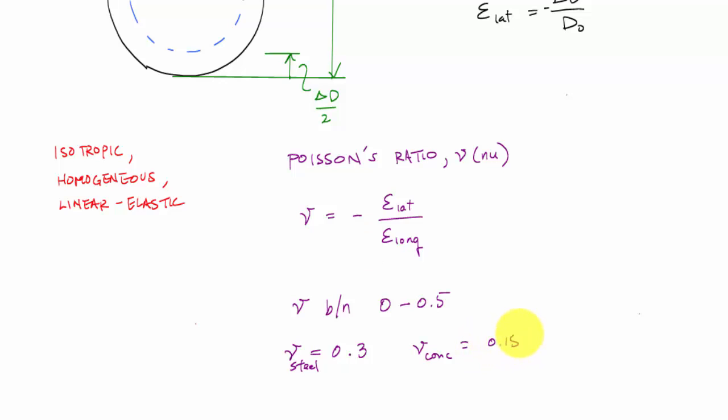And concrete has a Poisson's ratio around somewhere between 0.1 and 0.2. So, I'll say around 0.15. And cork has a Poisson's ratio that's almost zero, that's nearly zero. So, basically, what that's saying is that when you compress it, the lateral dimension doesn't expand. And when you pull on it, the lateral dimension does not contract.